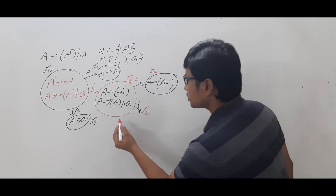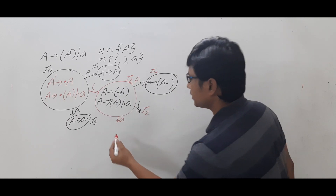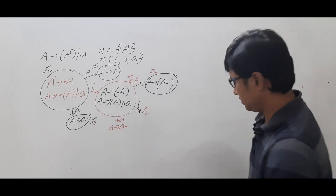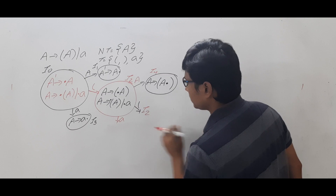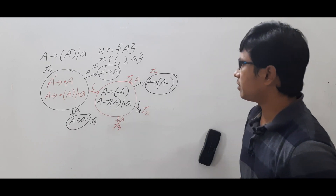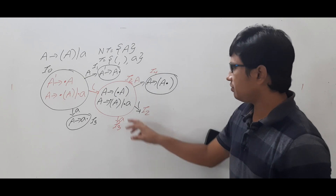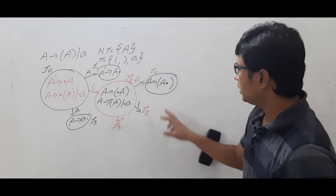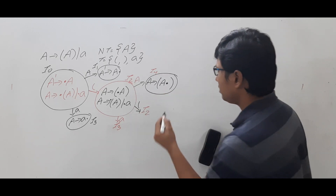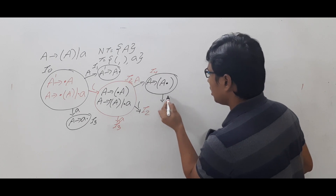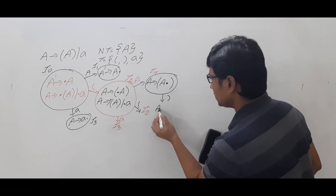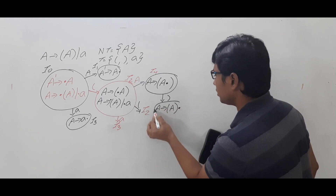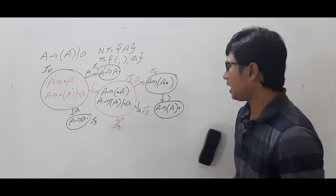From I2 on small 'a', we get A → a•, which is equal to I3. So from I2 on capital A we have I4, on open braces we loop back to I2, and on small 'a' we go to I3. Now from I4, on closed braces, we get A → (A)•, giving us item number I5.